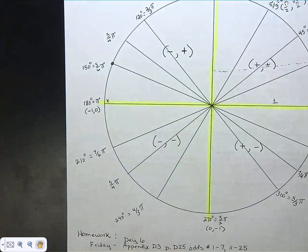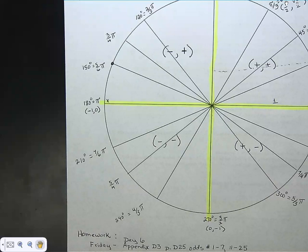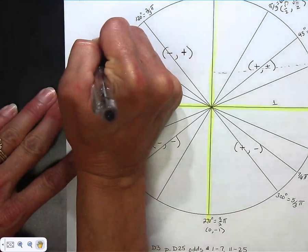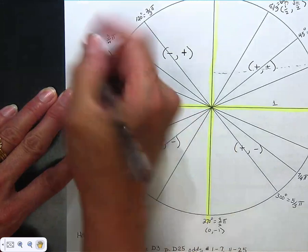For example, what's sine of 5π/6? I count: one-sixth, two-sixths, three-sixths, four-sixths, five-sixths. At that point in the second quadrant, is it x or y that's close to negative 1? Actually x is close to negative 1 — x is −√3/2. The y is 1/2. Since we're in the second quadrant, x is negative, so the ordered pair is (−√3/2, 1/2).